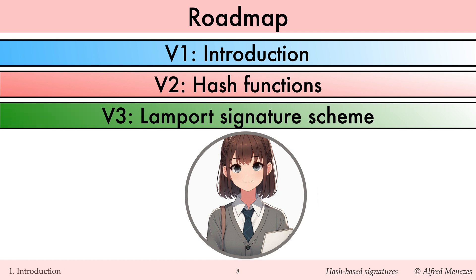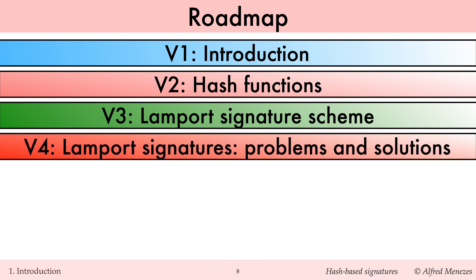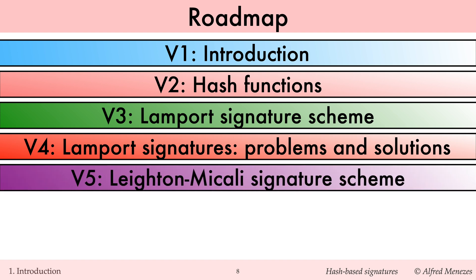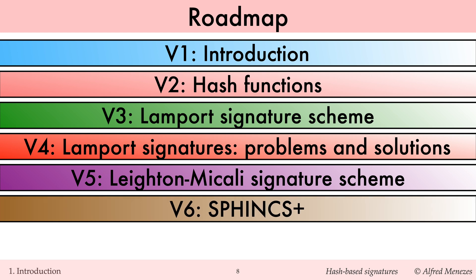In video V3, we'll introduce Lamport's pioneering 1976 hash-based signature scheme. Then in video V4, we'll identify some limitations with Lamport's scheme and describe solutions, including the key improvements by Winternitz and Merkle. These solutions are combined to yield the Leighton-Micali signature scheme, which we'll describe in V5. Finally, in V6, we'll outline the core ideas behind SPHINCS+.